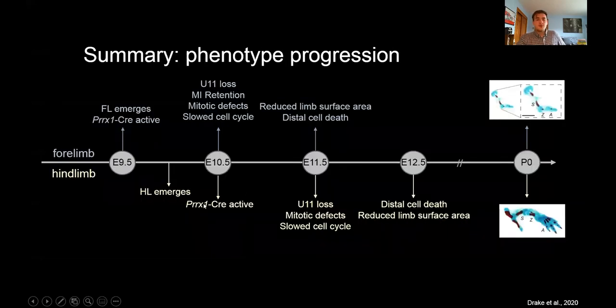What I've shown you is that in both the mutant forelimb and hind limb, 24 hours after Cre is active, we see U11 loss, minor intron retention, mitotic defects, and slowing of cell cycle. 48 hours after Cre is active, we see reduced limb surface area and distal cell death. Now because of the temporal delay in Cre activity in the hind limb, we think that is what is causing the hind limb to be more moderately affected, whereas the forelimb is severely affected at birth. But this is still speculative and leads me to my two major questions that remain for my thesis. And that is: why are distal limb progenitor cells more susceptible to the consequences of U11 loss than proximal limb progenitor cells? And is the difference in phenotype severity at P0 due to a forelimb-hind limb heterogeneity or the time at which U11 is lost?